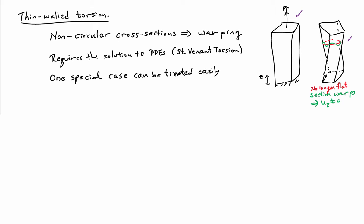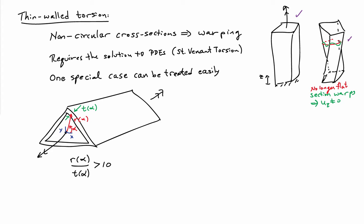But there happens to be one special case that we can treat easily, and that's the case I'd like to look at now. I want to consider bars under the action of torsion that have cross-sections that can be termed thin-walled. I've drawn a picture of one thin-walled bar here, or tube as it's normally called — a prism with a triangular cross-section that's hollow. The geometry of the cross-section is defined by R as a function of alpha, an angular coordinate measured from the x-axis. R measures position to the wall as a function of alpha, and at each value of alpha I also have a thickness t.